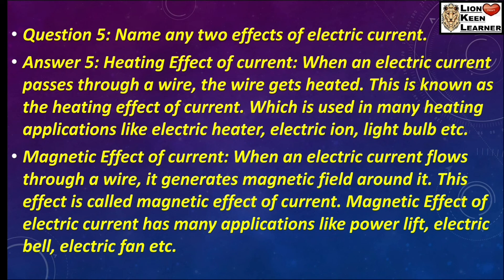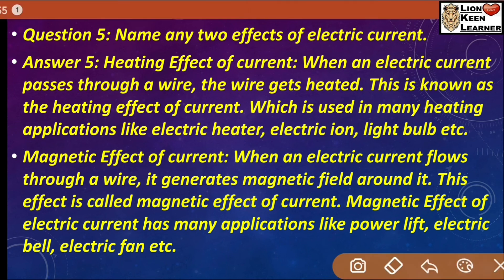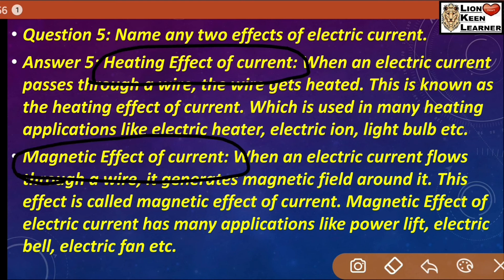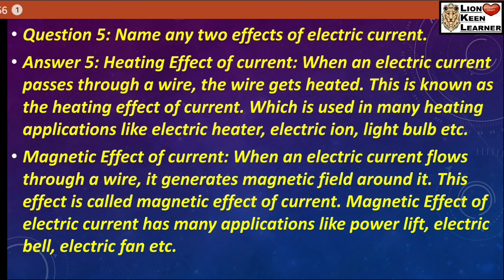Question number five: Name any two effects of electric current. दो ऐसे effects of electric current हैं: number एक, heating effect of electric current, और दूसरा, magnetic effect of electric current. When an electric current passes through a wire, the wire gets heated, this is known as the heating effect of current, which is used in many heating appliances like electric heater, electric iron, light bulb, etc.